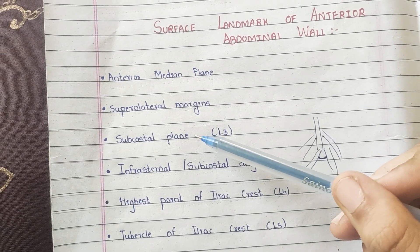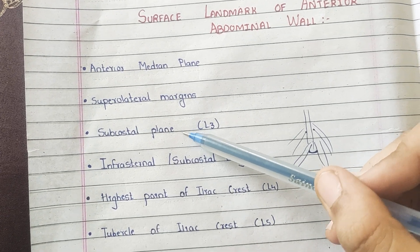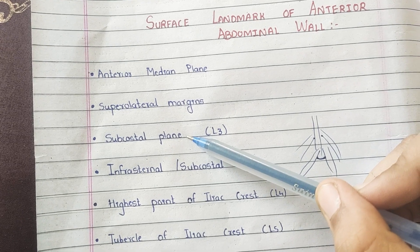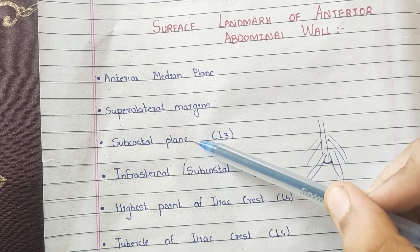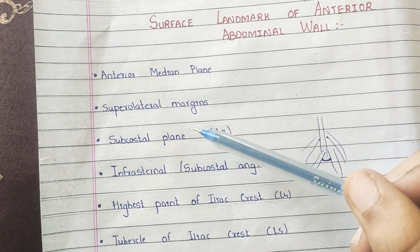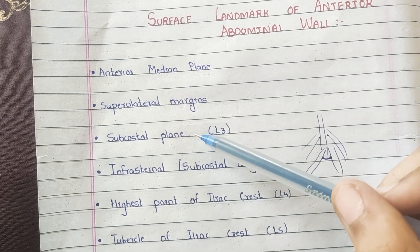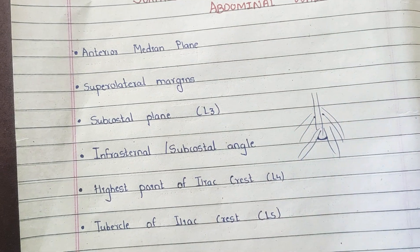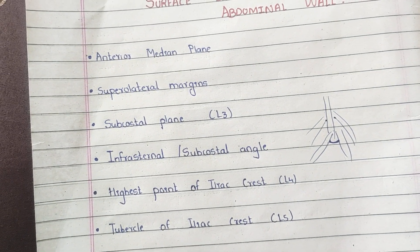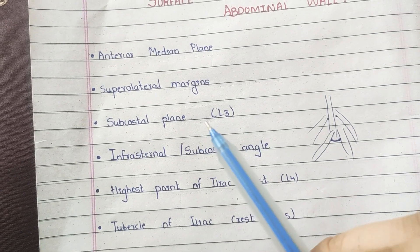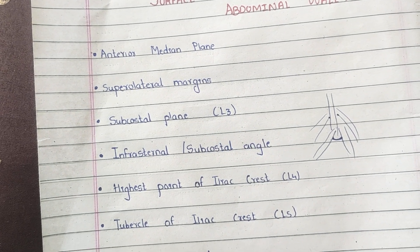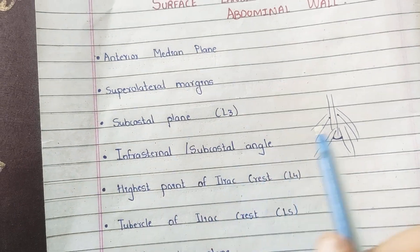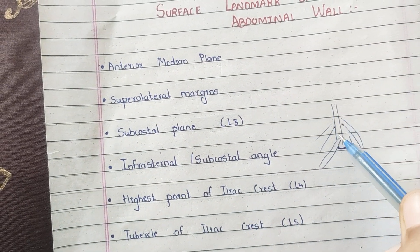The subcostal plane: the tenth costal margin lies at the region of the mid-axillary region. A transverse plane passing through this mid-axillary region of the tenth costal margin forms the subcostal plane, which lies at the level of the third lumbar vertebra.